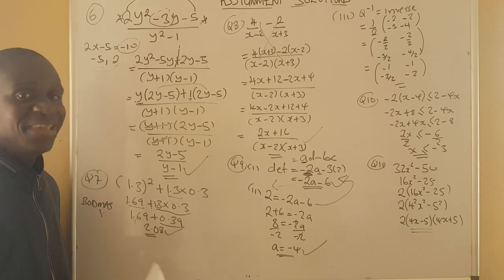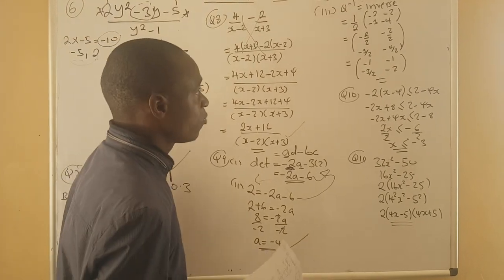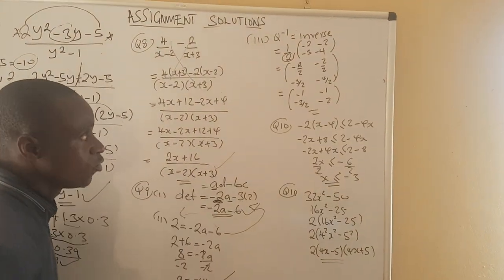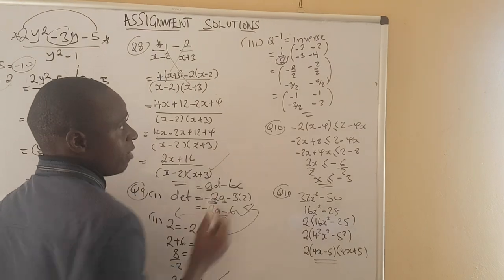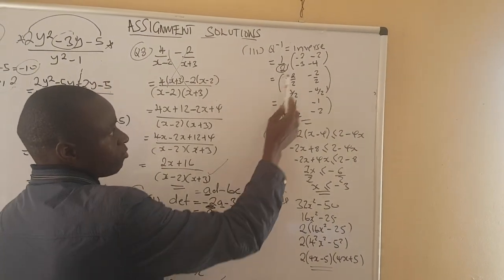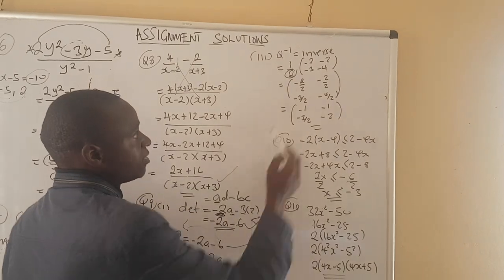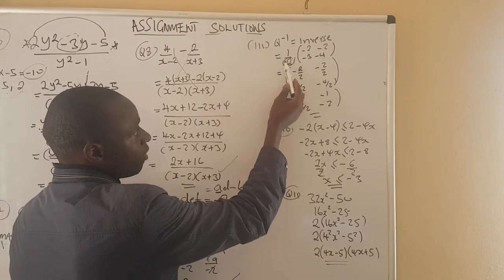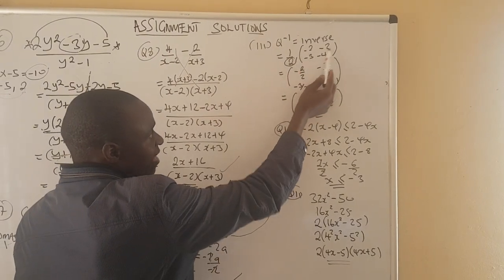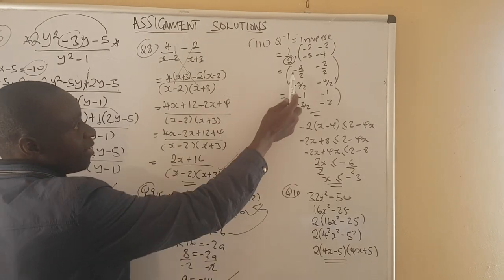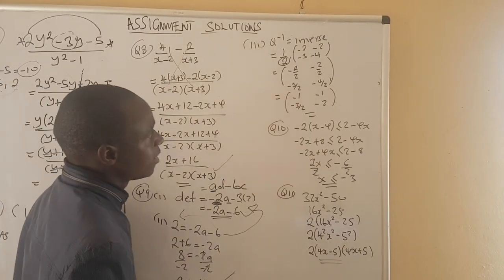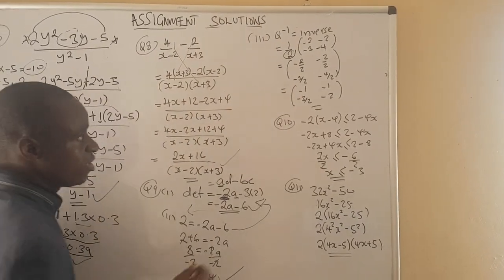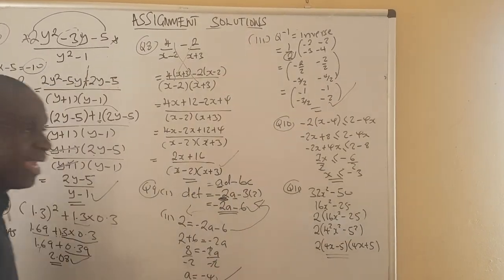Requirement 3 required finding the inverse of the matrix, using the determinant value of 2. Applying the inverse rules — swapping A and D, and negating B and C — then expanding by multiplying 1 over 2 through the matrix gives: negative 2 over 2, negative 2 over 2, negative 3 over 2, and negative 4 over 2. This was the final expression for the inverse.